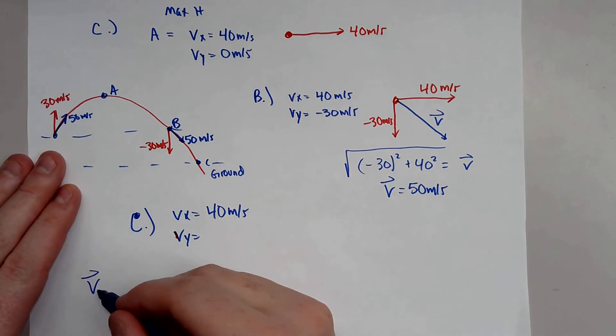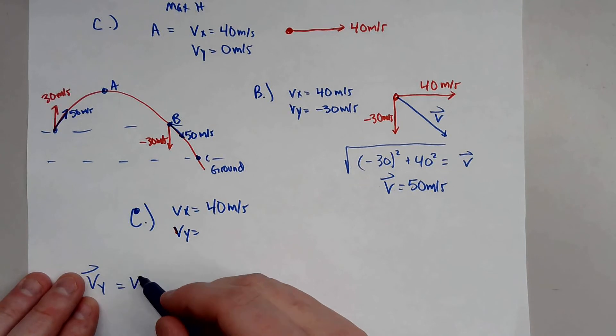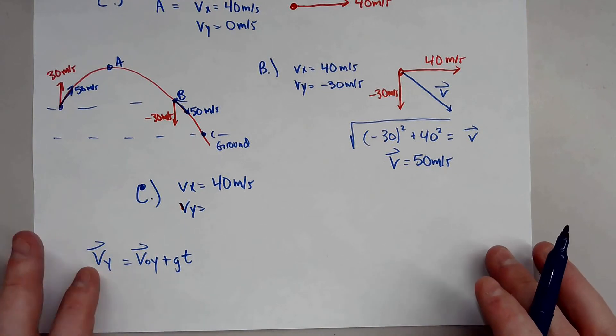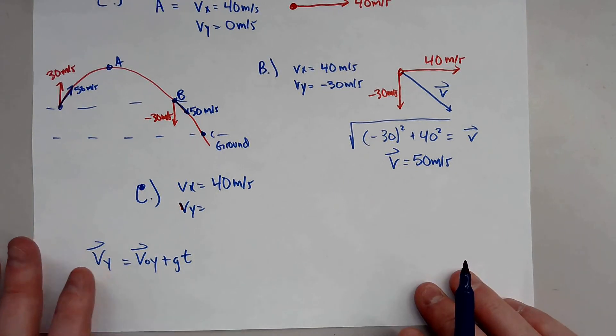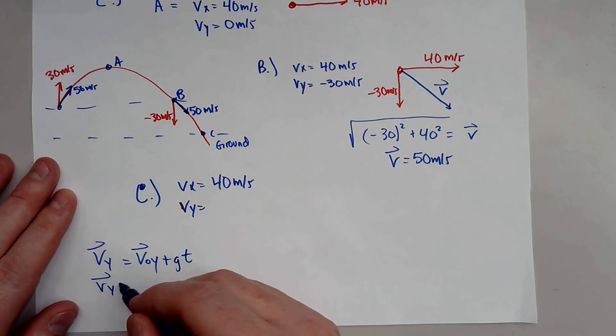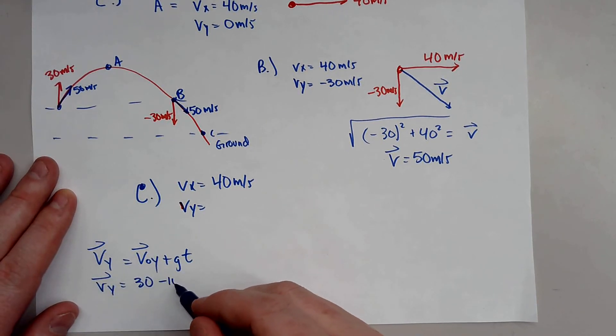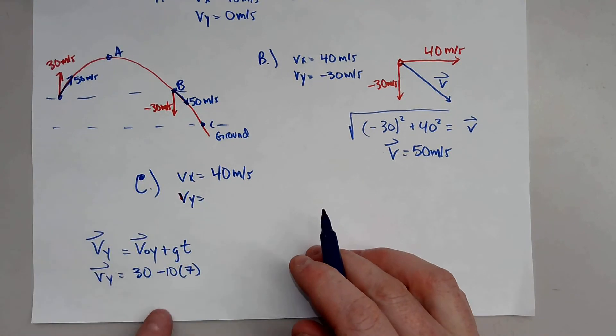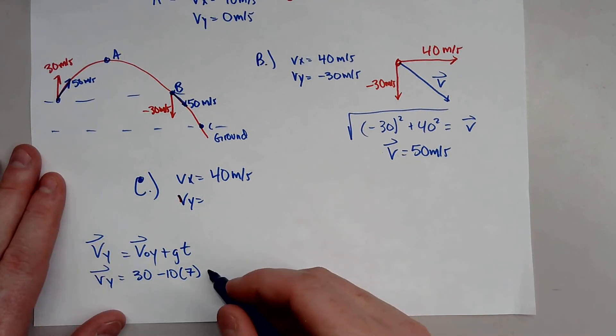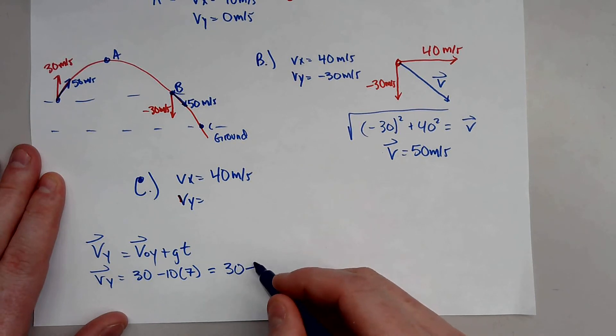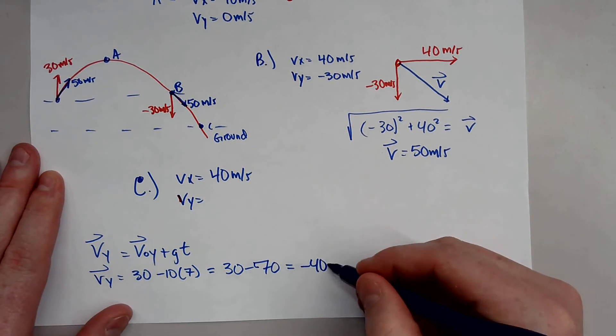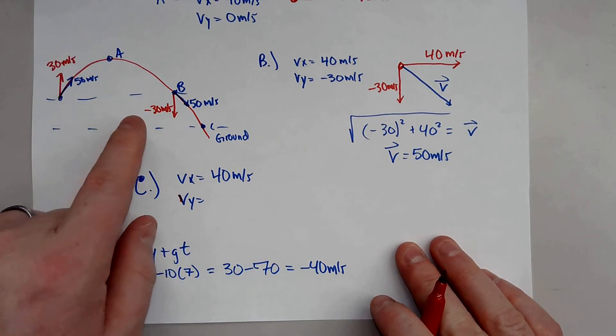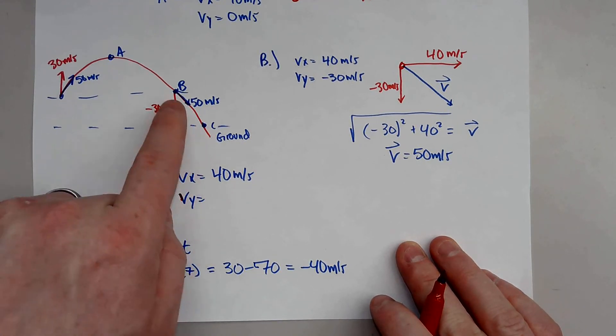So in order for us to do that, we can actually use kinematics. Velocity final in the y direction will be equal to the velocity initial in the y direction plus gravity times time. Now we know, this is the first kinematic actually. Now we know the initial velocity in the y direction, which is 30, and we know gravity is negative 10, and we know the object was in the air for 7 seconds. So this will tell us exactly how fast in the y direction our projectile's going at 7 seconds. So that is 30 minus 70 equals negative 40 meters per second. And that makes sense. So the object is definitely going faster than negative 30. And it's going down faster because it's had longer to fall.